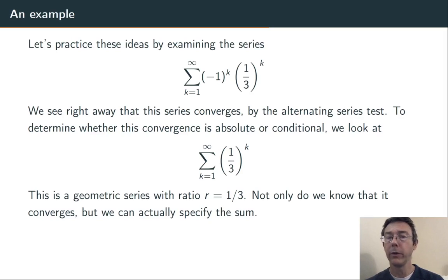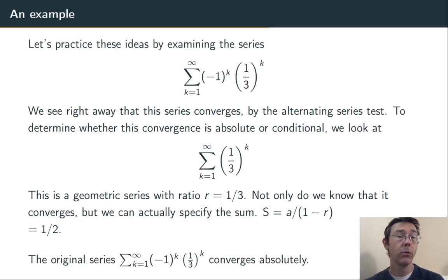By the way, we can also get the sum of this. The sum of a geometric series that converges is s equals a over 1 minus r, where a is the first term, and r is the ratio. In this case, that's 1/2. Therefore, the original series converges absolutely.